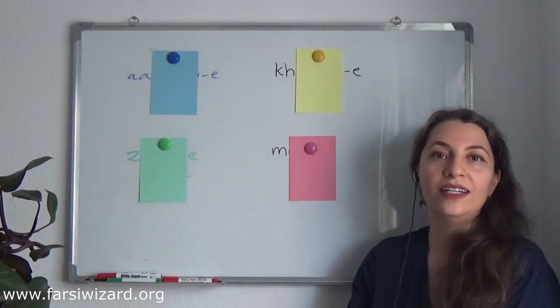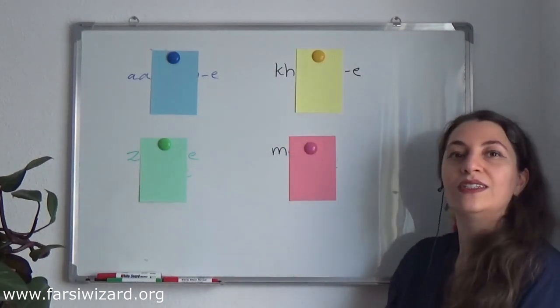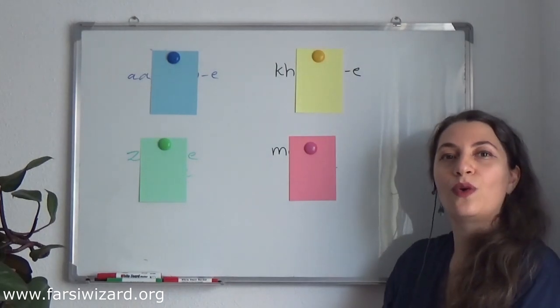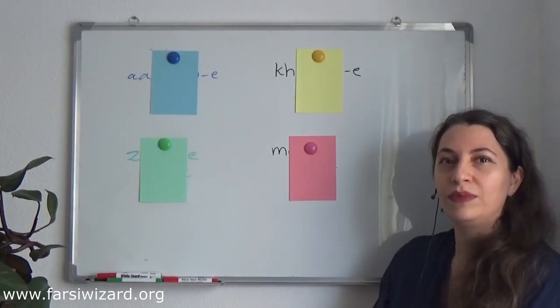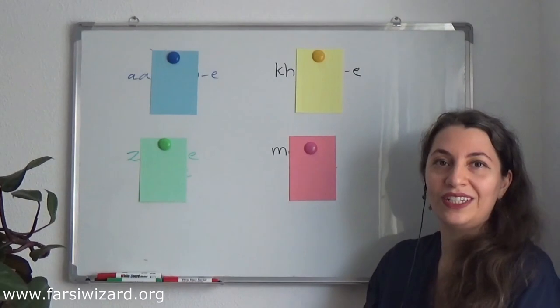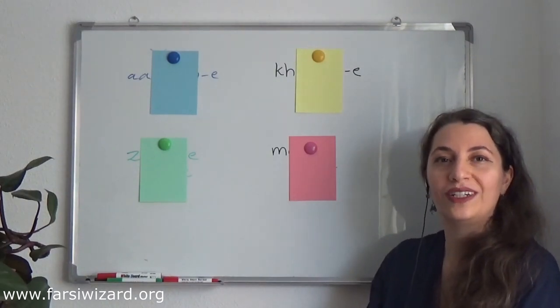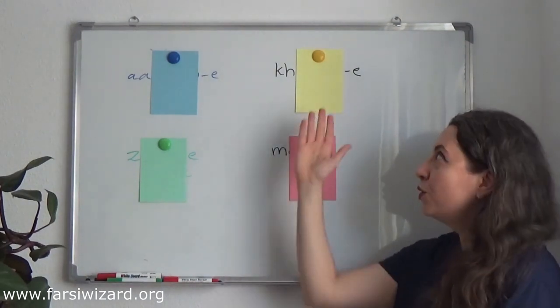Here for the sun, if you remember the word started with the 'kh' sound. So I will give you a little bit of a clue here. It is 'khor'. It starts with 'khor'. Do you remember the sun was?